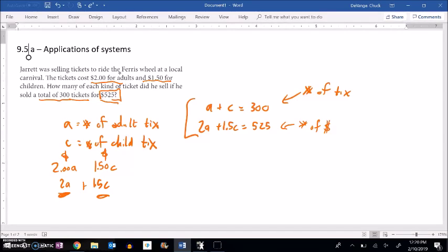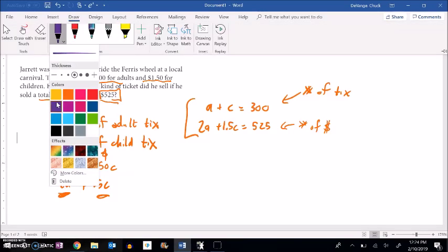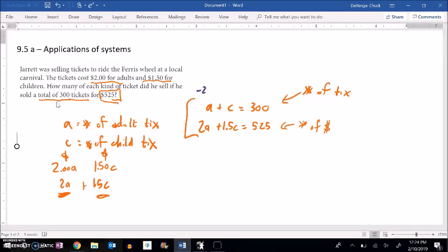And now notice I have my system written. And now all I have to do is just solve that system to get at it. Just cancel out one of these A's. So if I multiply this top one by negative 2 and add it to the second one, that will cancel that A there. So negative 2 times equation 1, that would make this negative 2A, negative 2C, negative 600. And now when I add those together, that cancels out. Negative 2 plus 0.5 is negative 0.5C. And then negative 600 plus 525 is negative 75. Divide both sides by negative 0.5, and I got 150.